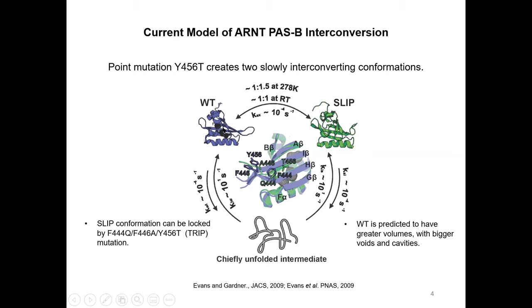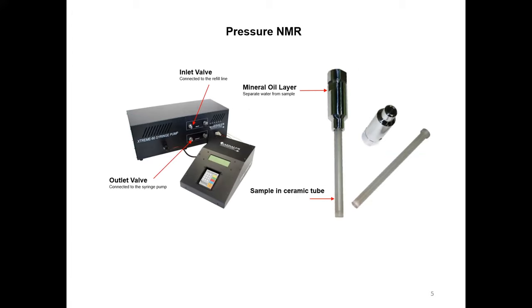In the past, previous lab members identified that a single point mutation Y456T can split the protein into two equally populated and slowly interconverting conformations. Two additional mutations can lock the protein in the alternative conformation, allowing structural characterization. One of the biggest differences is that the central I-beta strand of this protein is shifted by three residues in this alternative conformation, which is why we call it the slip conformation. The slipping of the central beta I-beta strand involves 20 hydrogen bonds being broken and reformed.